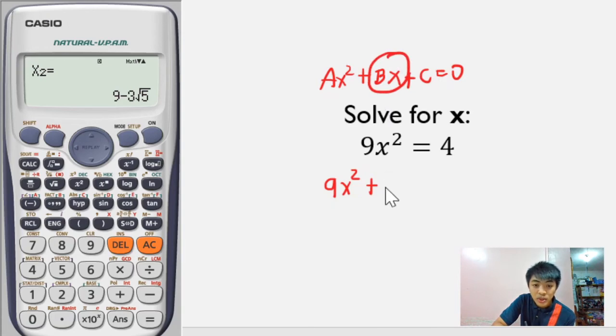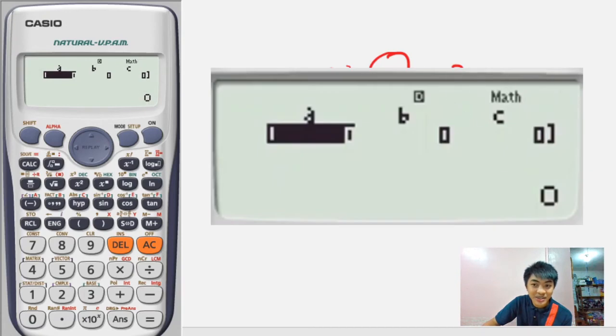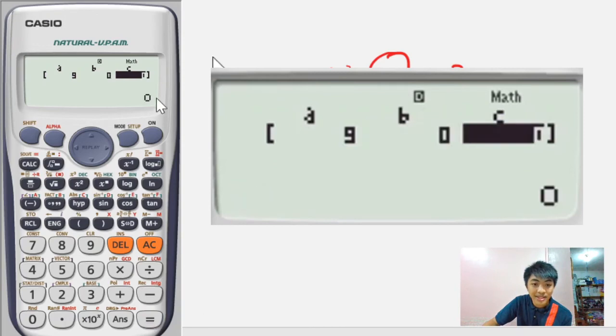Kung nakasulat ang ating quadratic equation in general form, ganito siya. Kung titignan mo yung A natin here, yung A natin sa quadratic equation na to ay 4, yung B is 5, and yung C or the constant is negative 9. Itong mga to ang i-input natin sa calculator. Let's do that.